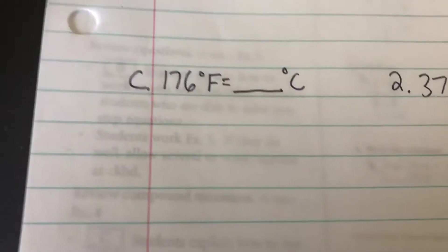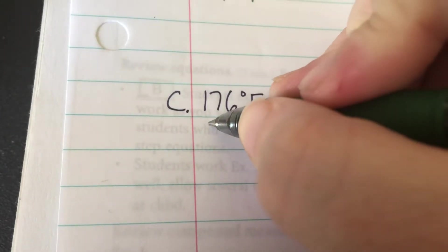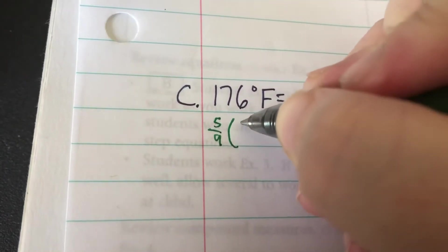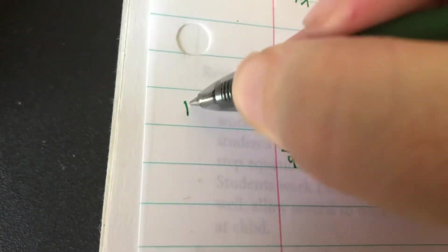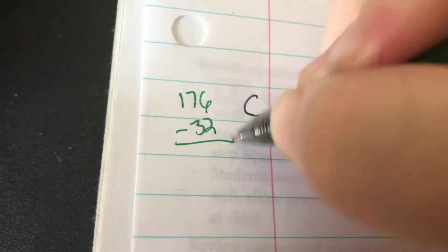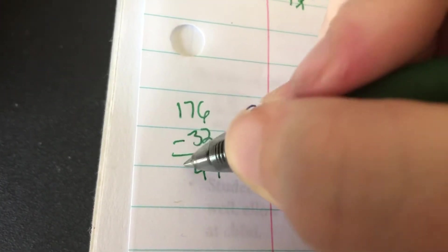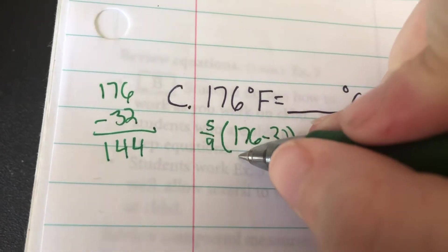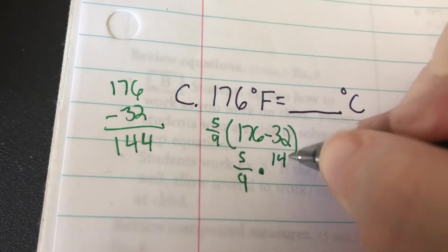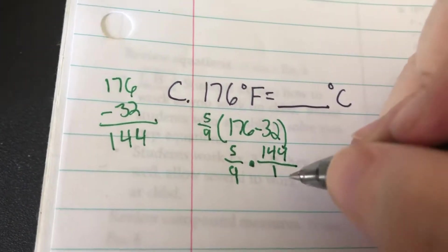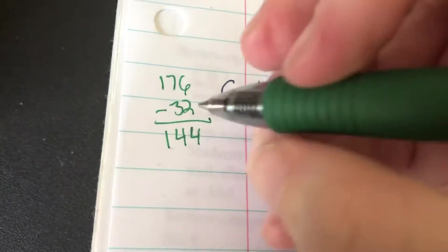C, 176 degrees Fahrenheit. Same process. 5/9 times 176 minus 32. I'm over here to subtract that. 6 minus 2 is 4, 7 minus 3 is 4, 1 minus nothing is 1. So 5/9 times 144 over 1. I don't know my 9s that high, so I don't know if it goes into 144 or not. I'm going to have to divide to see if I can simplify.